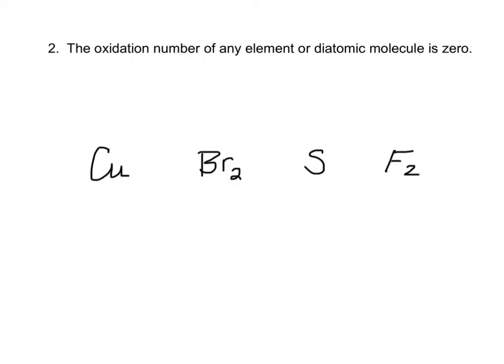The second rule is that the oxidation number of any element or diatomic molecule is zero. So plain copper, zero, bromine zero, zero, zero.